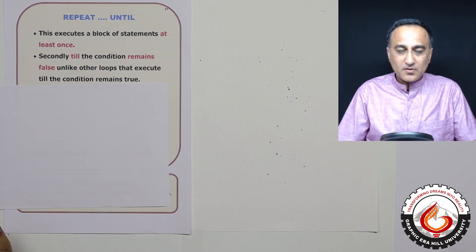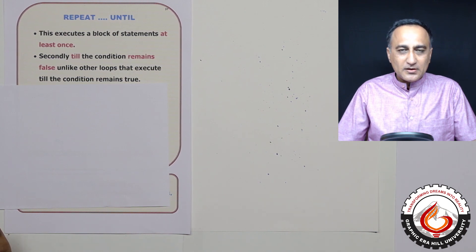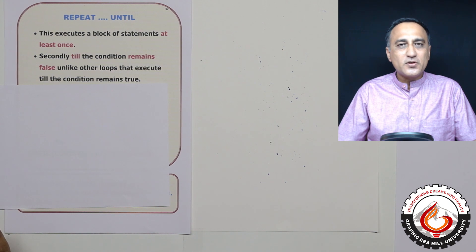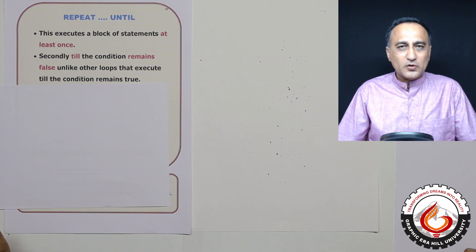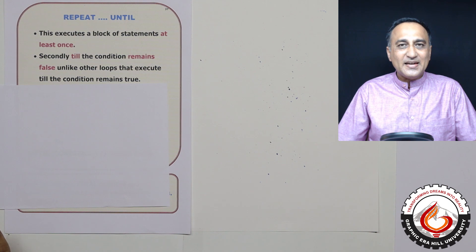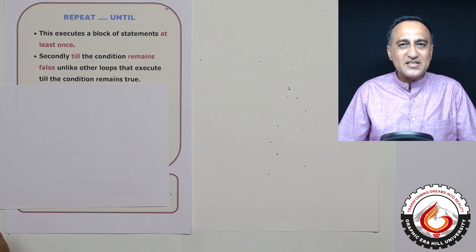Thus far, we have used the while-do end-while loop and the repeat-for-count loop. The loops we have used so far, you would have noticed one thing: we were always checking whether the condition was true and then executing the body of the loop. At times, we require a loop where it doesn't check the condition first — it checks the condition at the end, allowing the body of the loop to execute at least once before the condition is checked.